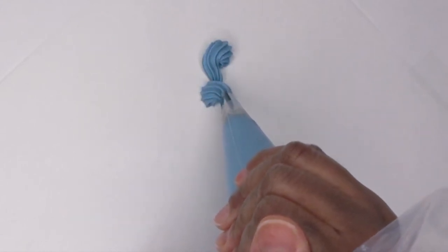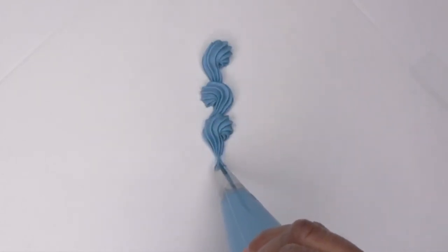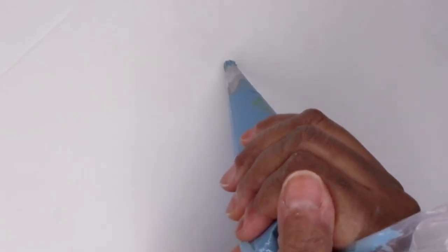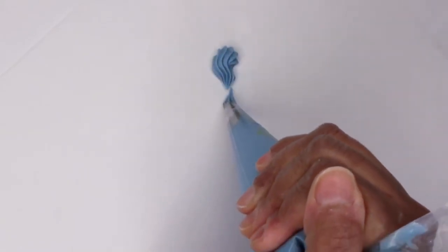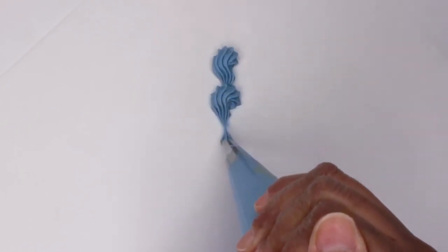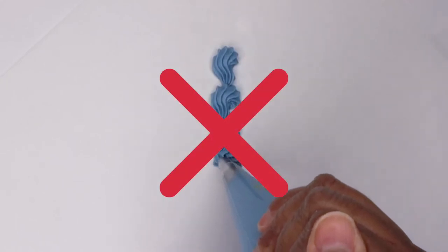As I pipe this technique, it reminds me a lot of the shape of a question mark. So if you think about the shape of a question mark as you're piping in the one direction and then think about that opposite for the next direction, it'll help you to focus to achieve the technique. The reverse shell requires a little bit more concentration than other techniques. So if you are not focusing, you'll end up making your reverse shells face all the same direction like this. While this is really beautiful, this is not a true reverse shell border.